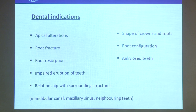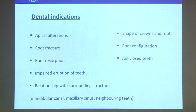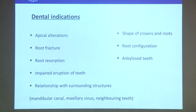Now coming to the indications when we use a cone beam scan. For dental questions: apical alterations, root fractures, root resorption, impaired eruption of teeth, the relationship with surrounding structures — the mandibular canal, maxillary sinus, neighboring teeth — shape of crowns and roots, root configuration, endodontic treatment, and ankylosed teeth. These would be the dental indications where you can use a cone beam with a small volume — only the area you're interested in. You do not have to scan the whole skull for a dental question.